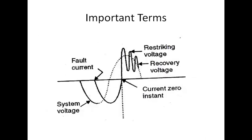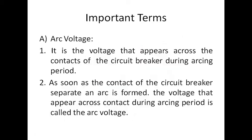Here, with the diagram, you can see the cycle of restriking voltage. Whenever the dielectric strength becomes insufficient, at that same time, the restriking voltage increases.